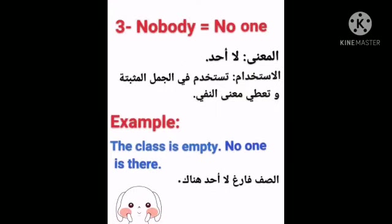Nobody and no one are equal — you can use either one and they give the same meaning. Their meaning is 'no one / not anyone.' We use them in affirmative sentences to give a negative meaning, for example: the class is empty — no one is there, or nobody is there. Both give the same meaning. We use nobody in affirmative sentences to express negation.